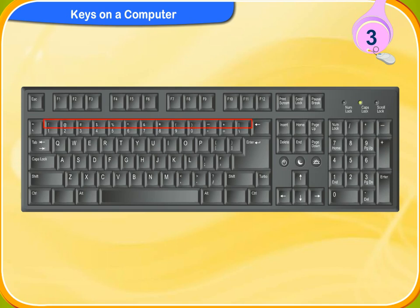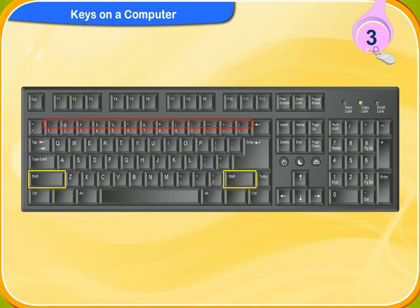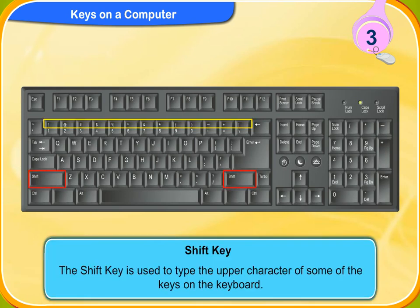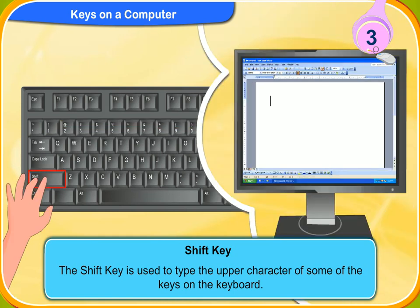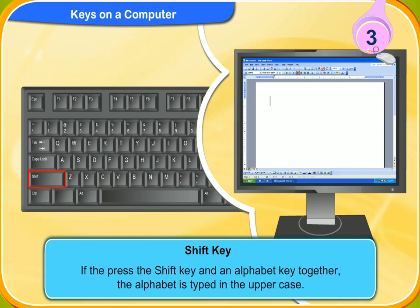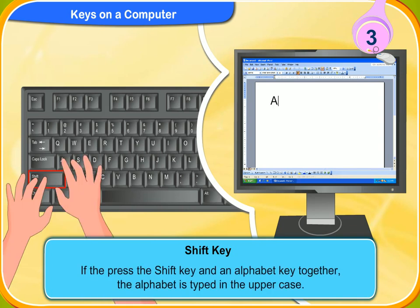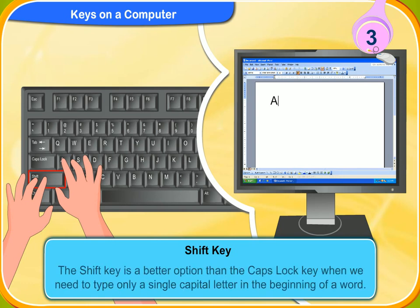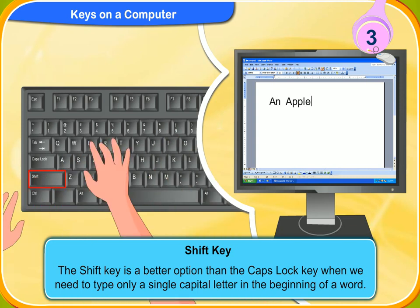The number keys have a symbol printed above the number. If you wish to type the symbol, you need to press the shift key and the number key together. So the shift key is used to type the upper character of the keys on the keyboard. The shift key is also used to type capital letters. If we press the shift key and an alphabet key together, the alphabet is typed in uppercase. The shift key is a better option than the caps lock key when we need to type only a single capital letter.